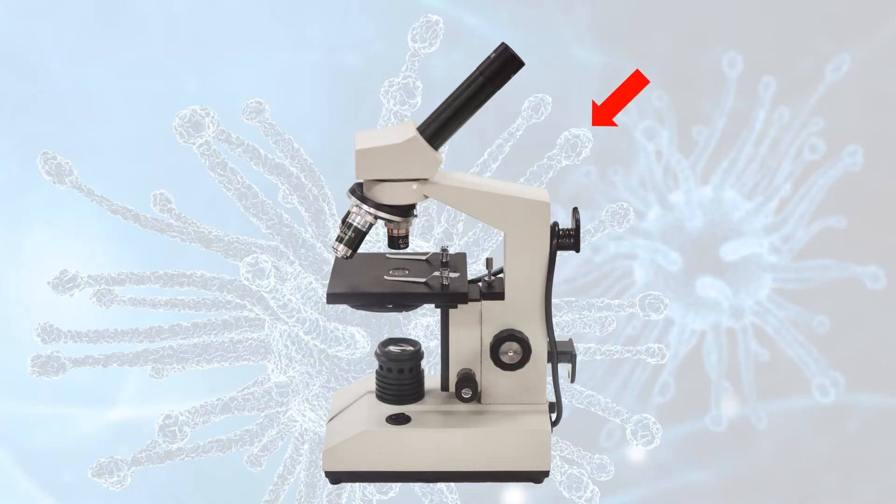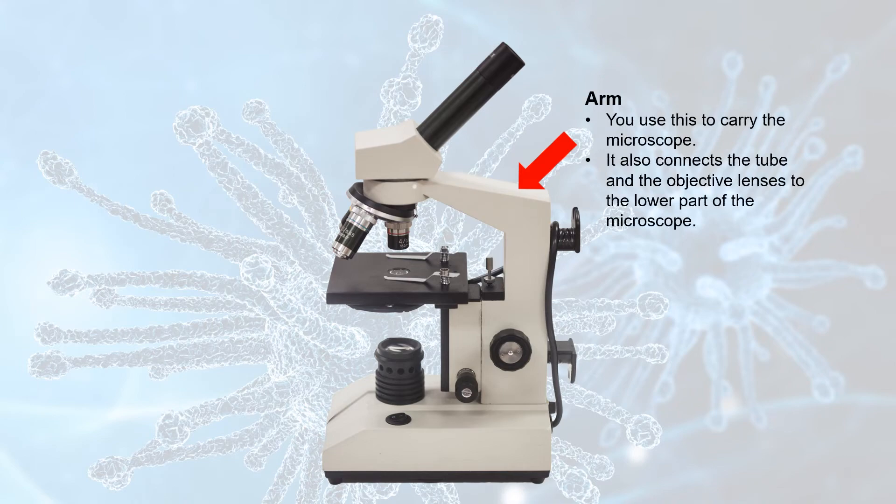This part of the microscope is known as the arm. You use the arm to carry the microscope, and we'll learn more about that in the next video. The arm also connects the section of the microscope containing the objective lenses and the tube to the lower part of the microscope.